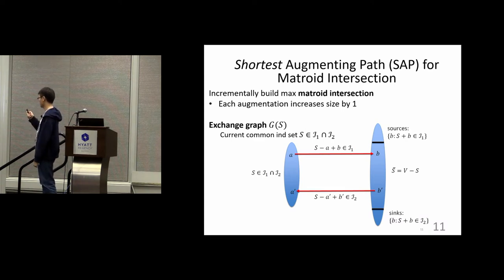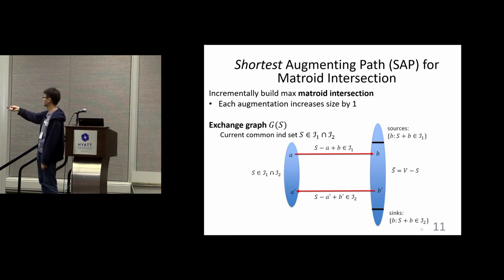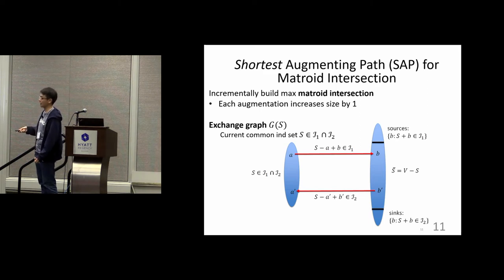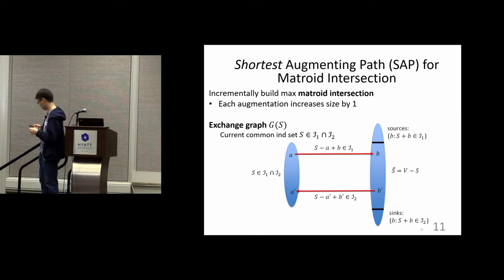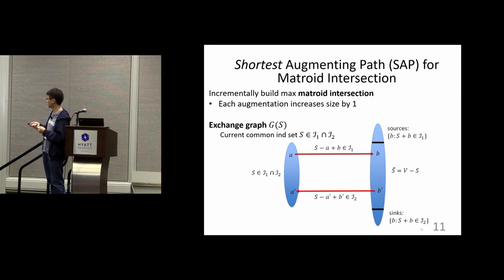We also have two special types of vertices: sources and sinks. These are vertices that you can add to your current solution S and still preserve independence. Depending on whether it is for M1 or M2, you call them sinks or sources.